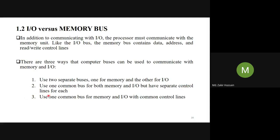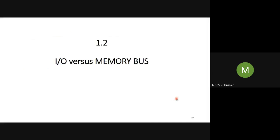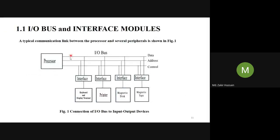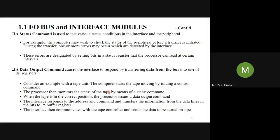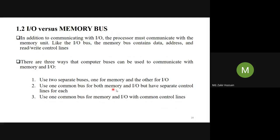The second method uses one common bus for both memory and I/O, with separate control lines for each. The third method also uses one common bus for memory and I/O, but here we are going to have common control lines instead of separate ones. In subsequent slides, you will see how this really works.